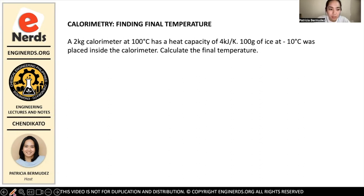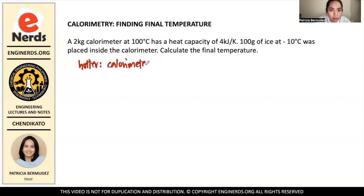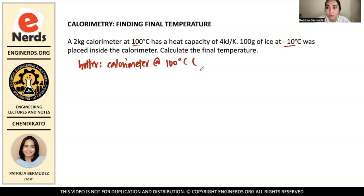First, you have to identify which one is the hotter object. The hotter object here is the calorimeter. Why? Because if you compare negative 10 to 100, 100 degrees Celsius is higher than negative 10. So our calorimeter is hotter at 100 degrees Celsius, and therefore it will lose heat, meaning it will have negative Q.